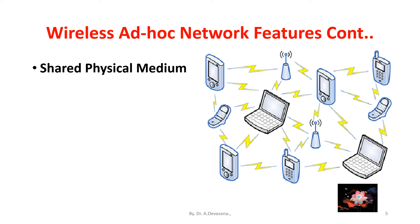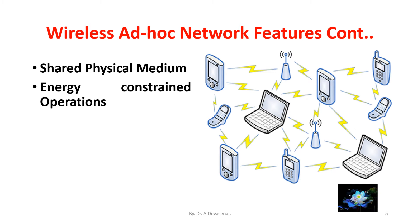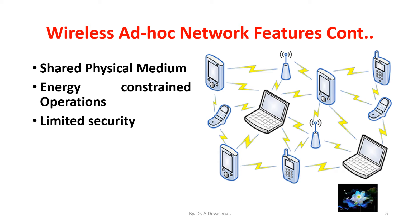The seventh feature is that in ad hoc networks, energy-constrained operations can be critical in terms of resource utilization, as some or all the nodes rely on batteries or other exhaustible means for their energy. Mobile nodes are characterized with less memory, power, and lightweight features. The eighth feature is that ad hoc networks offer limited security. Wireless networks are more prone to security threats. A centralized firewall is absent due to the distributed nature of operation for security, routing, and host configuration.